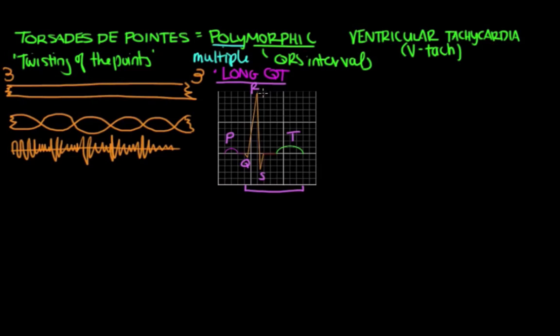It represents when the ventricles are depolarizing and when they're repolarizing. So the QT interval represents the length of time or the interval when the ventricles depolarize and repolarize.